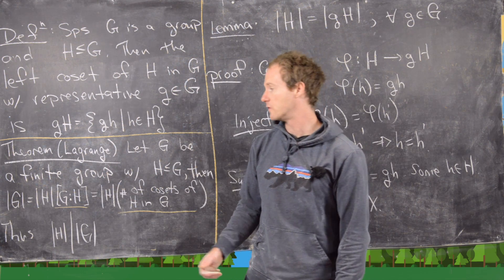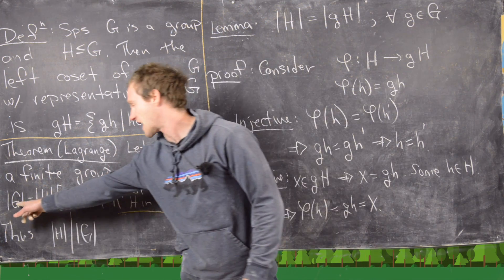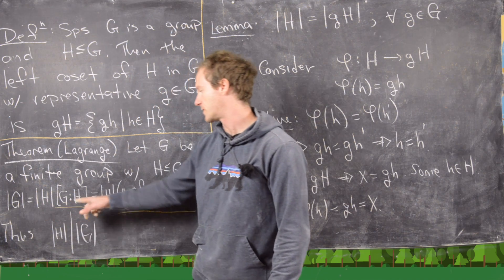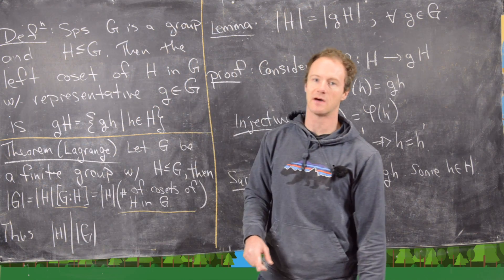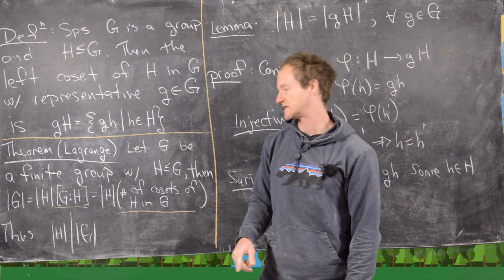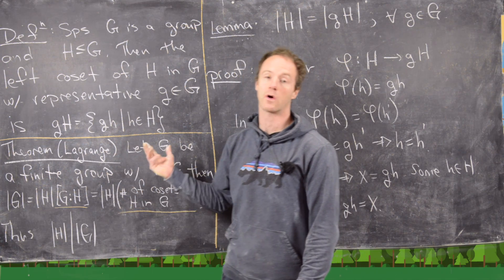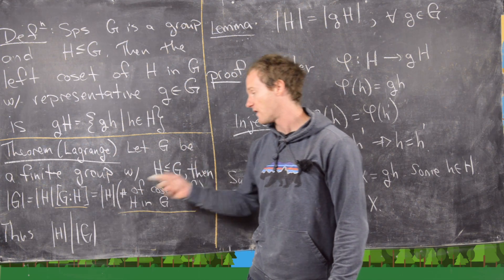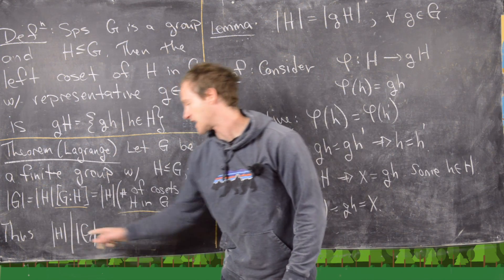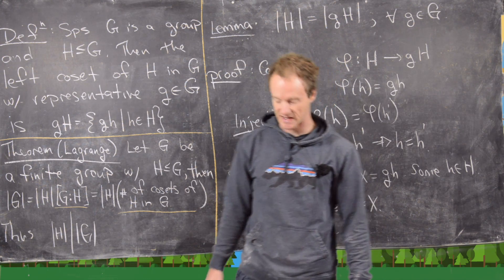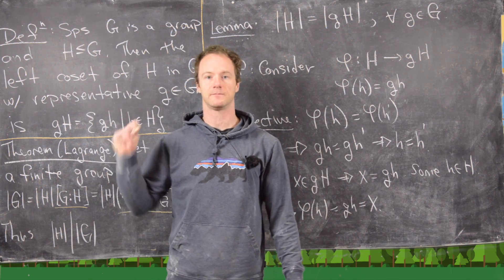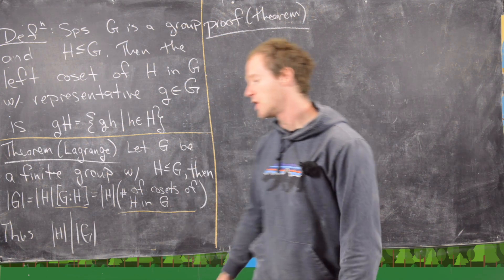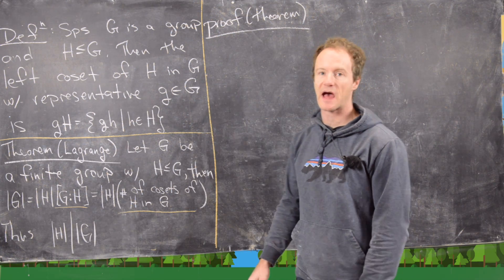Now we're ready to prove Lagrange's theorem: the size of a group equals the size of a subgroup times the number of cosets it has, and consequently the size of a subgroup always divides the size of the group.